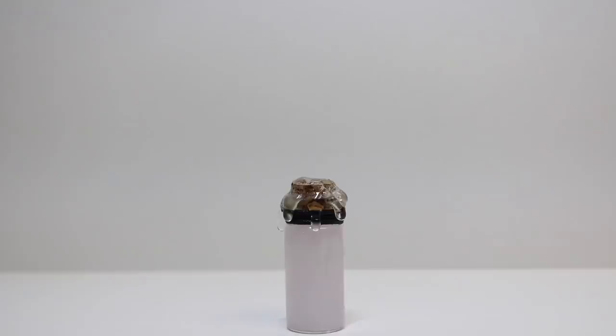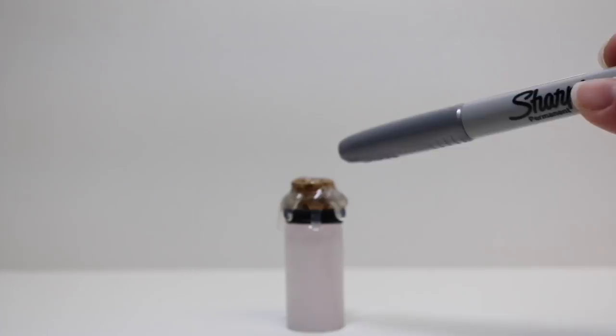Now we are going to let this dry completely and then we're going to go over the drips with a silver Sharpie or a silver paint marker, whatever you have handy. We're going to color in the glue with the Sharpie so that it'll look like silver drips of wax.